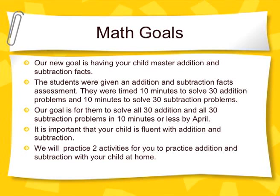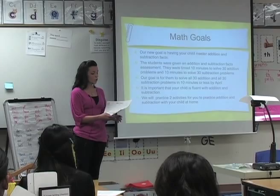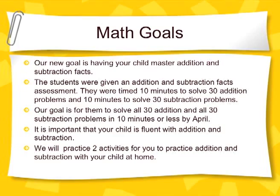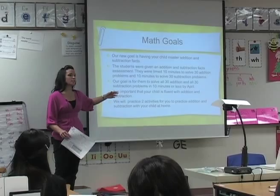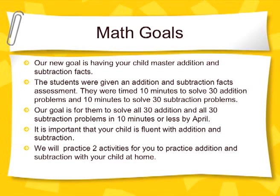Now for tonight's activity — we're going to start focusing on math. Students were given addition and subtraction facts assessments: 30 problems of addition and 30 problems of subtraction, with 10 minutes to complete them. I count how many answers are correct. Their goal by the end of the year is to answer all 30 problems with all 30 correct answers. After they've mastered that, I'm changing it to speed — once they're accurate with addition and subtraction, how fast can they do it? We're going to practice two activities you can use at home to help with this.